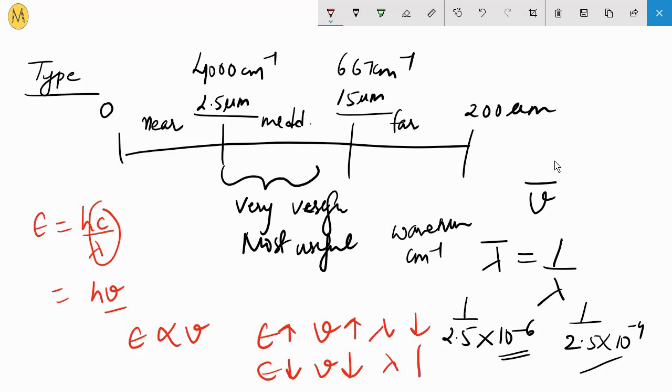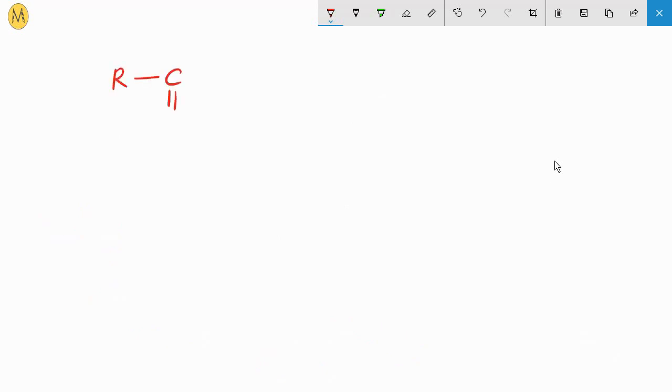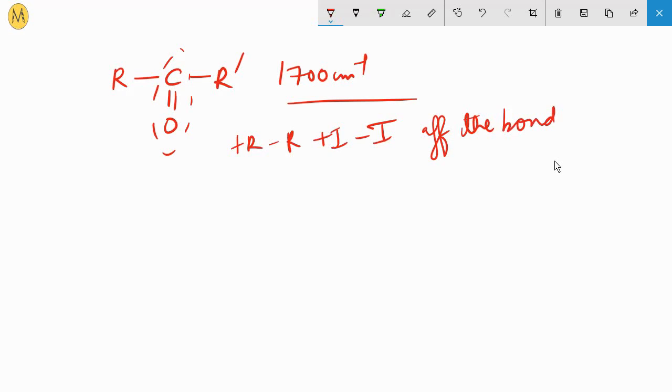When we consider the example of ketone, say R-C double bond O-R', this particular group gives us a peak at 1700 centimeter inverse. There can be various groups attached that might have plus R, minus R, plus I, minus I effects that will affect the bond, its rotation, etc.